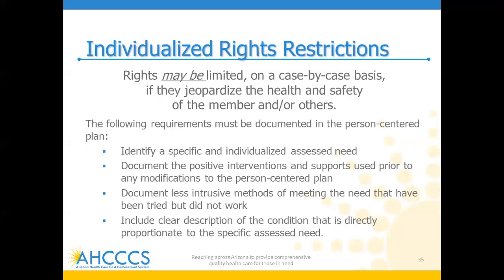We can't say that all individuals with Down syndrome cannot have a key to their front door because of their disability. What's specific about that individual that has created a risk? What are the positive interventions and supports that have been used prior to any modifications being applied? Maybe someone in the past has handed out their house key to somebody they met at the bus stop — what were the documented interventions and supports provided to help that person learn that was risky behavior? What were those less intrusive methods that the team tried before actually deciding that we need to restrict that individual from having the key to the front door of the group home?